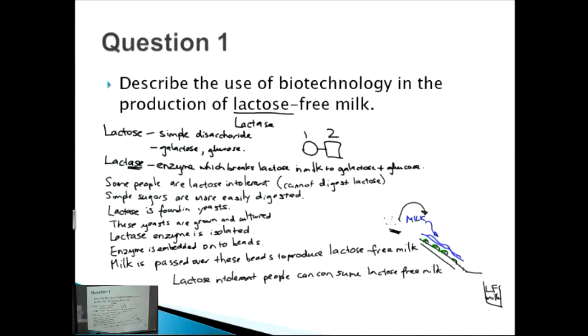This question is actually a medium question - that usually means you're looking for about six to seven points. We can first talk about what lactose is, then what lactase is, then lactose intolerance as well as the fact that for lactose intolerant people simple sugars are more easily absorbed. Then we talk about the process from here onwards, how lactase is found in yeast, how they're grown and cultured, how the enzyme is isolated, and finally how the generation of lactose-free milk can be consumed by people who are lactose intolerant. If we count those marks up, we've got about seven marks which would give us full marks.